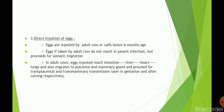In the direct ingestion route, eggs are ingested by either adult cows or calves below 6 months of age. In adult cows, no patent infection is seen; instead, somatic migration occurs. The migratory route in adult cows goes from intestine → liver → heart → lungs, and also to the placenta and mammary gland, facilitating transplacental and transmammary transmission later in gestation and after calving, respectively.